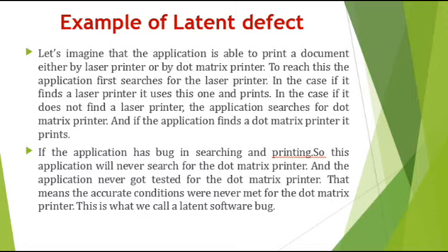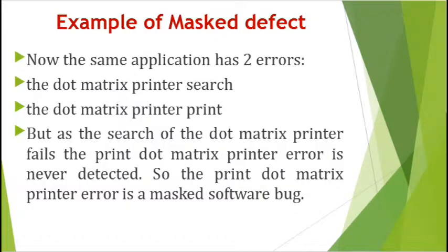One defect is in searching the dot matrix printer, and another is in printing the document. What happens is the printing defect we will not be able to find, because we have a defect in searching itself. The condition is never going to be met to find the error in printing because searching the dot matrix printer itself has a defect. This is called the latency of a bug.